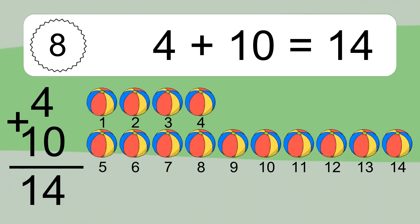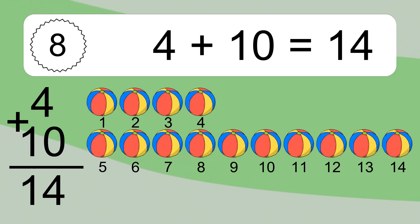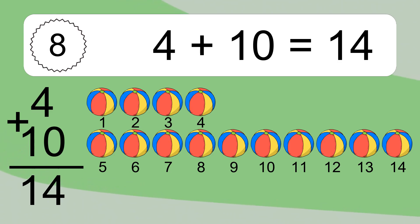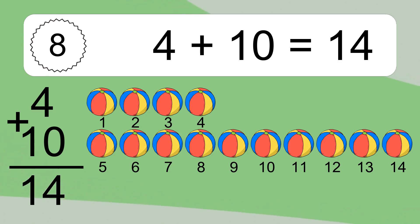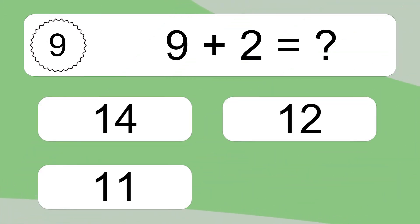4 plus 10 equals what? 4 plus 10 equals 14. Let's count it: 1, 2, 3, 4, 5, 6, 7, 8, 9, 10, 11, 12, 13, 14.